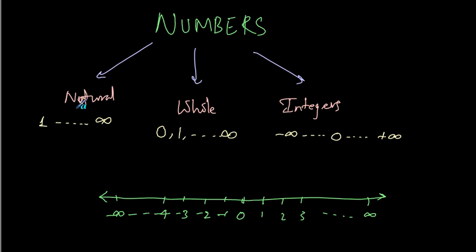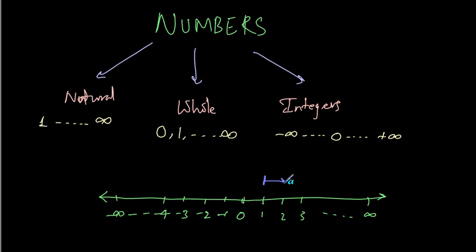Let's see where natural numbers are on this number scale. If we look at natural numbers, they are from 1 till positive infinity, so they will lie on the positive side of the number scale — from 1 till infinity, we have natural numbers.